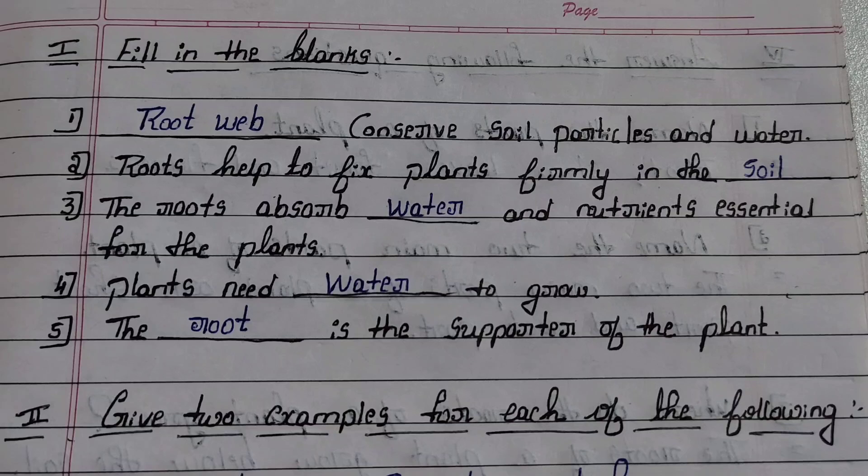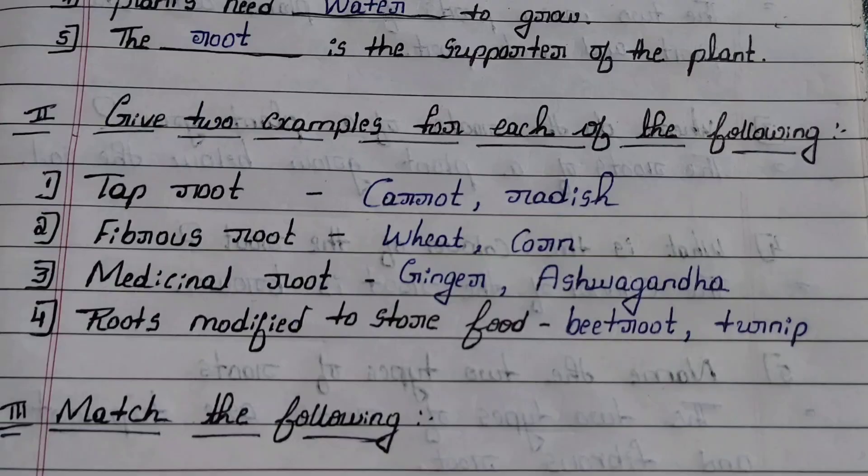Second section: give two examples for each of the following. First one, taproot: carrot, radish. Second one, fibrous root: wheat, corn. Third one, medicinal root: ginger, ashwagandha. Fourth one, roots modified to store food: beetroot.